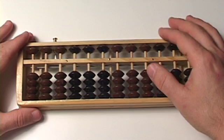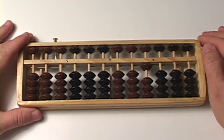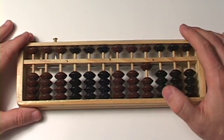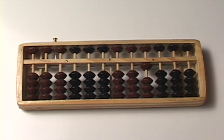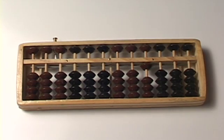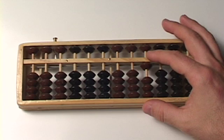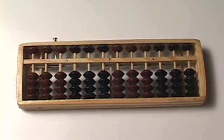When we add something, we move it towards the center bar, and now that says one. Well, you probably guess if I'm going to subtract, I'm going to do just the opposite of that. So since this says one, if I want to take away one or subtract one and make it say zero, I move it away from the bar. See, that's easy. Piece of cake.